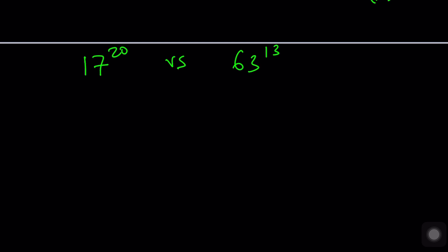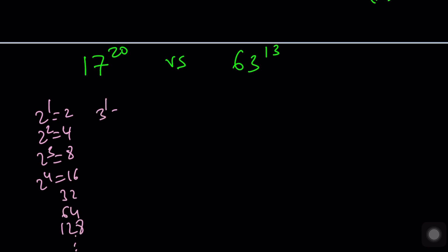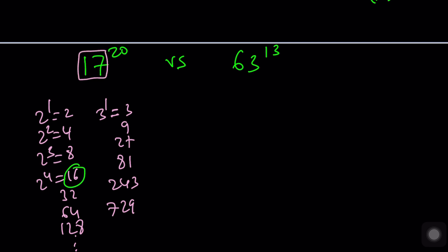My approach is basically based upon using the same base as a transition. I want to compare these two bases using numbers we can easily manipulate — powers of a prime. Think about 2: 2^1=2, 2^2=4, 2^3=8, then 16, 32, 64. Now look at your bases. Can you find a power of 2 close to 17? Yes — 16 is pretty close. Can you find something close to 63? Yes — using the same prime base, we can use 64. That's the trick, that's the main idea.